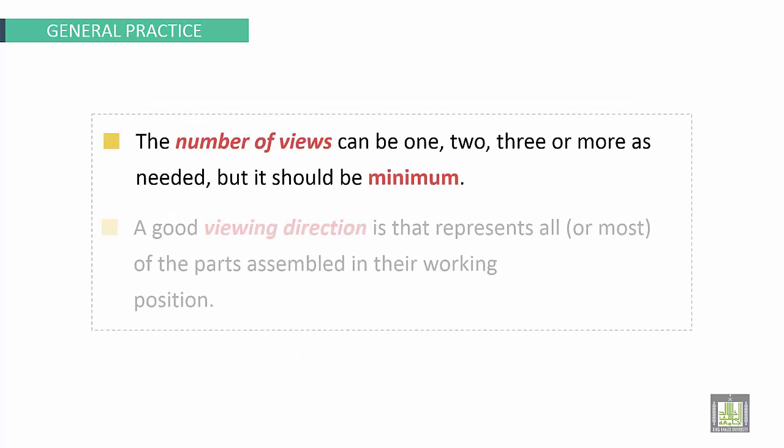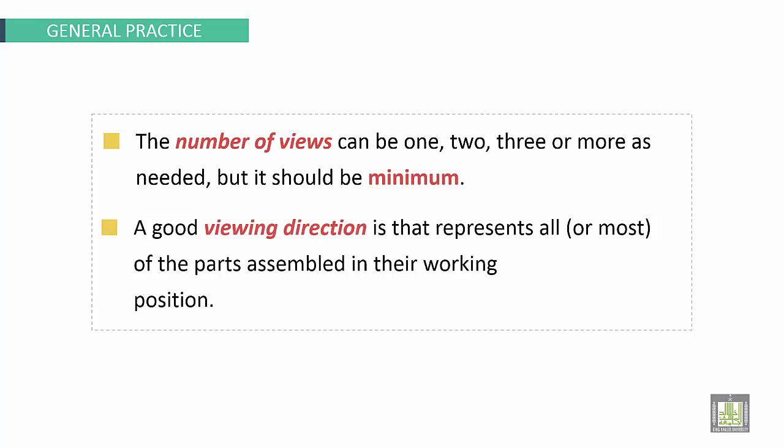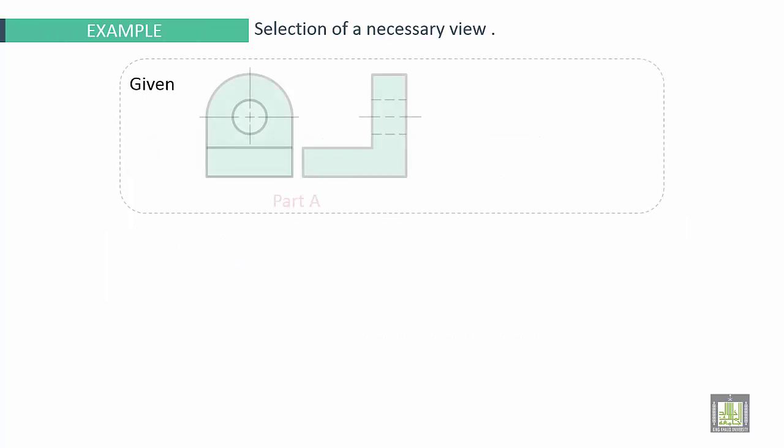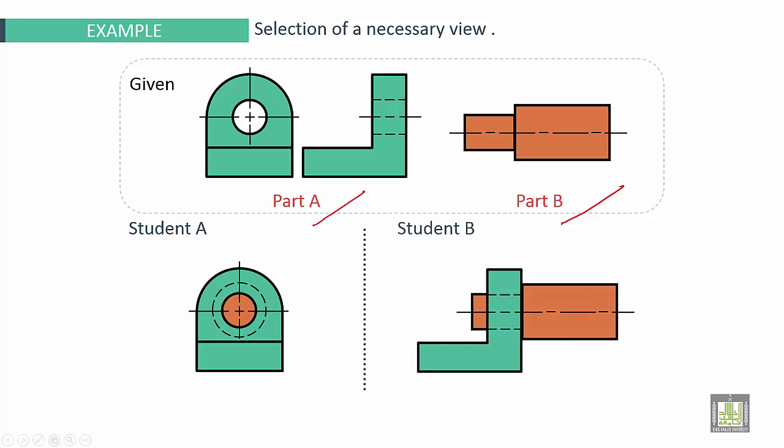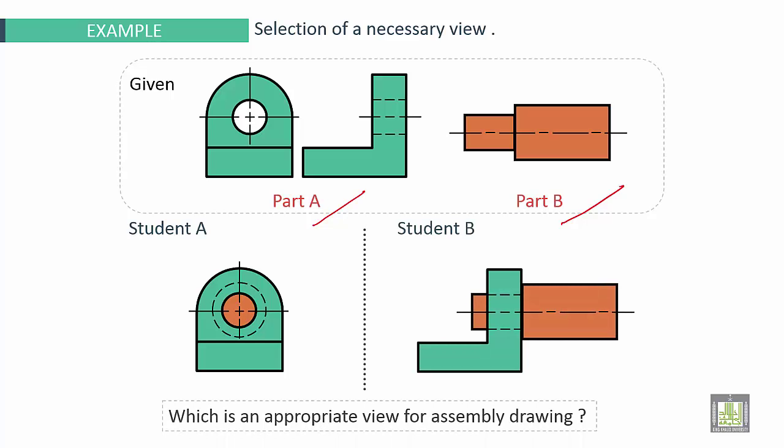Some general practices. The number of views can be one, two, three or more as needed, but it should be minimum. Also, a good viewing direction is that represents all or most of the parts assembled in their working position. We'll take an example now. Selection of necessary views: we have part A with two views and part B to be assembled. Student A can make assembly drawing like that and student B can make assembly drawing like this. Which is an appropriate view for assembly drawing? Definitely that one.